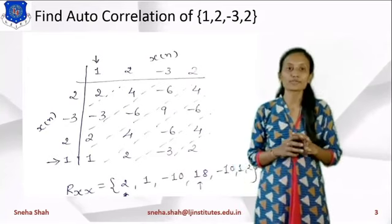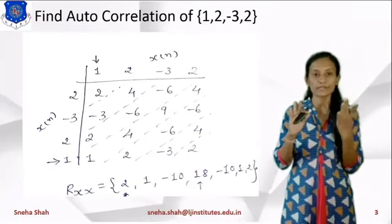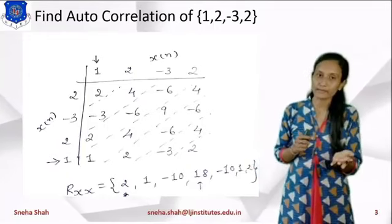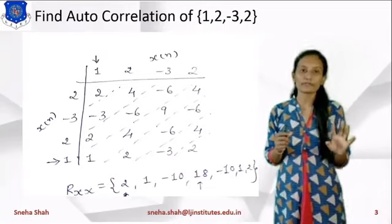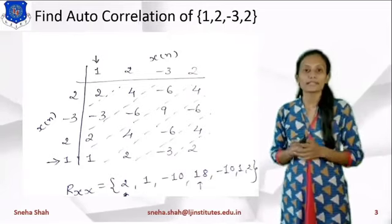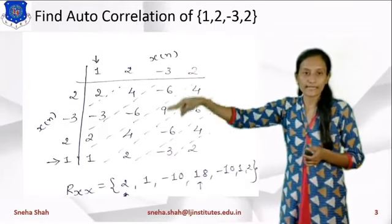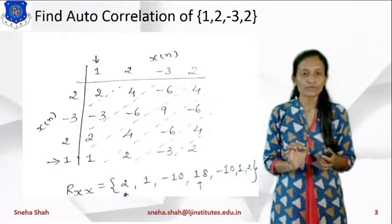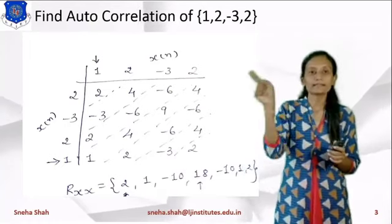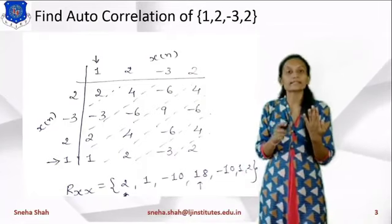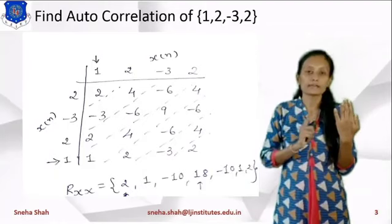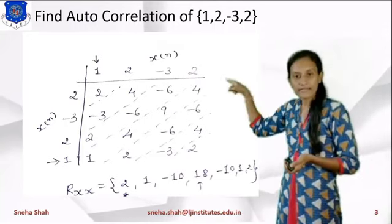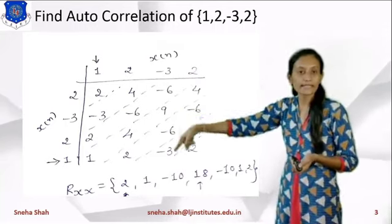Convolution and correlation are basically the same, with one difference: in convolution we fold one signal and then shift, multiply, and add. In correlation we do not fold the signal — we directly combine both signals. So in the auto-correlation of this, we are taking this signal on both sides, writing {1, 2, -3, 2} on the first row. In the convolution, you would write the term as-is for the first signal and fold the second signal. So we write the first term as-is, and for the second term we write after the folding operation.